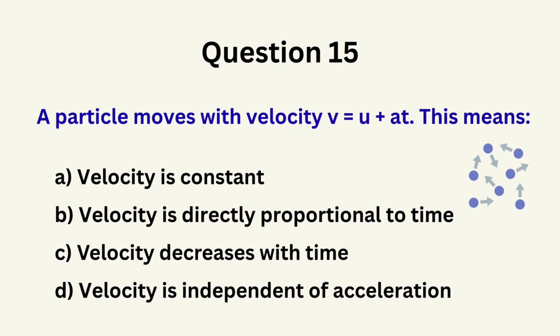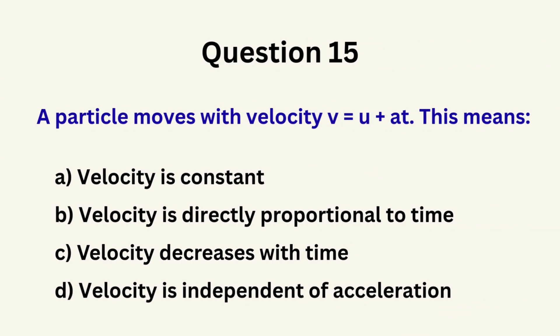Question 15: A particle moves with velocity v = u + at. This means... A. Velocity is constant, B. Velocity is directly proportional to time, C. Velocity decreases, D. Velocity is independent of acceleration. The correct answer is B: velocity is directly proportional to time.